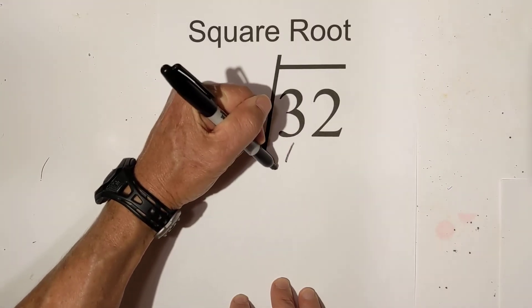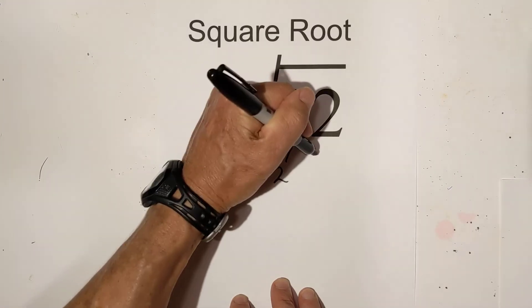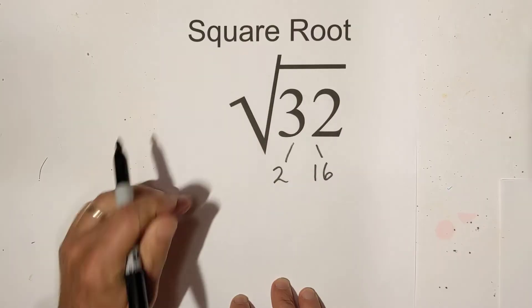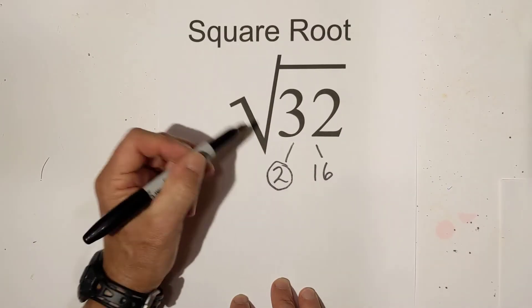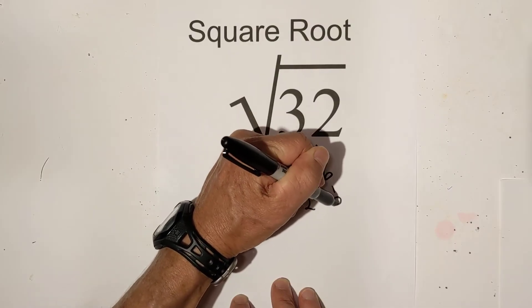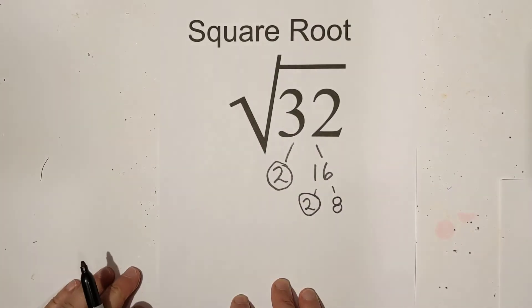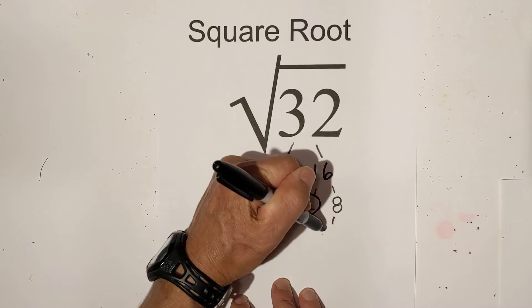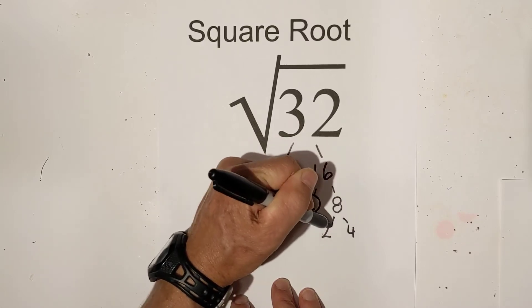I like to use a factor tree to simplify. So let's begin. 2 times 16 is 32. Circle the 2 because it is prime. And then 2 times 8. Circle the 2 because it is prime. What this does is help you get all the prime numbers.